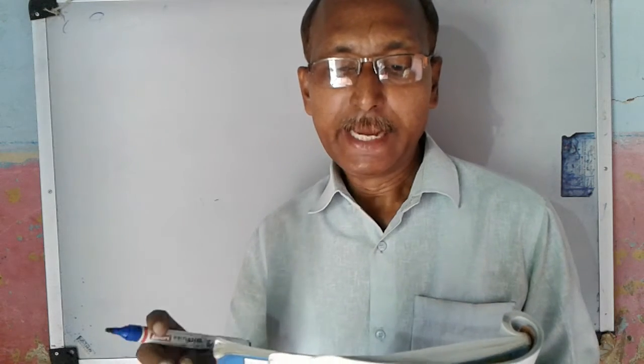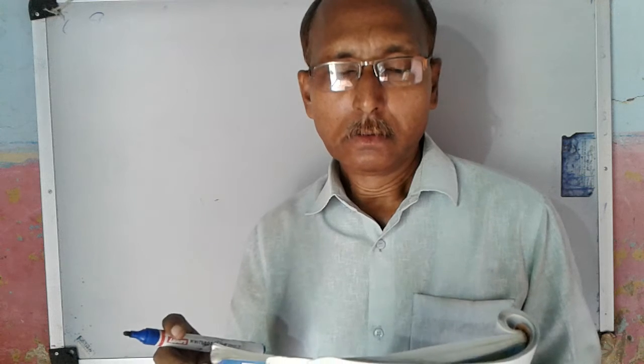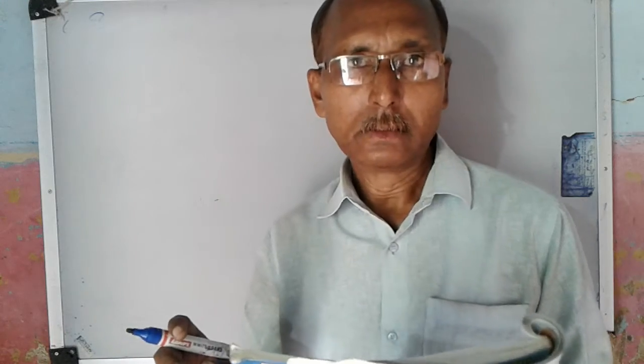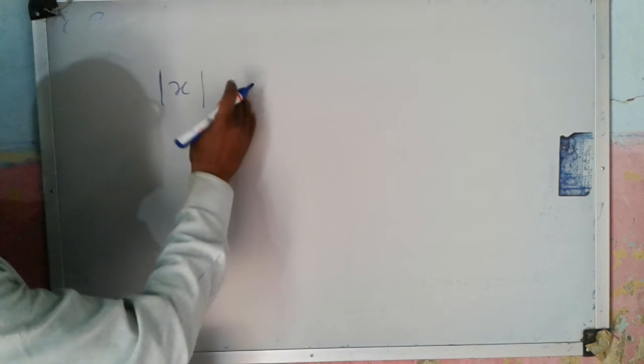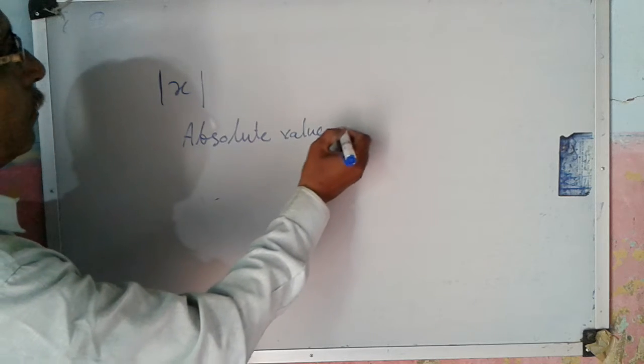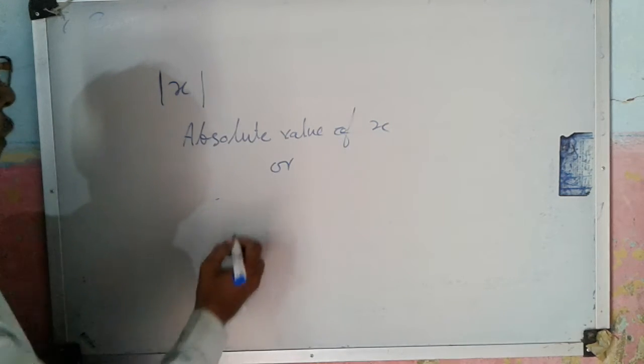So what is Absolute Value? Suppose you know the number line. If X is a real number, then the Absolute Value of X is its distance from 0 on the number line — the distance from 0 of any real number. It is called the Absolute Value, and it is written using the symbol as Absolute Value of X or Modulus of X.